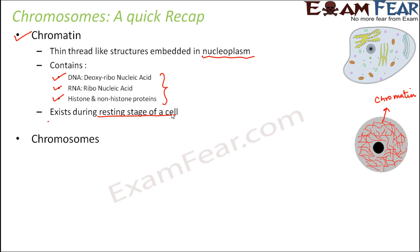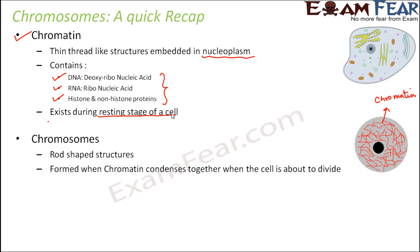When the cell enters the dividing stage, these chromatin condense to form structures called chromosomes. The composition of the chromosome is the same as the composition of chromatin, because end of the day the chromatin itself is forming the chromosome. Chromosomes are rod-shaped structures, formed when chromatin condense together when the cell is about to divide. So only during cell division do you see chromosomes.